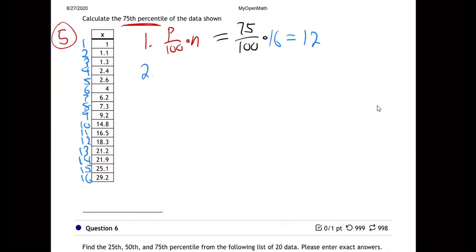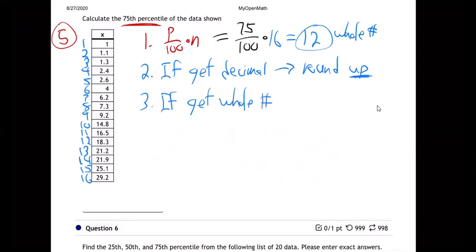Step two. If you get a decimal, now we did it, we got a whole number, didn't we? This is a whole number this time. So I'm going to show you the others, but I'm going to just write it out just to be thorough. If you get a decimal, you remember you round up. If you get a whole number, if you get a whole number, which is what we got,